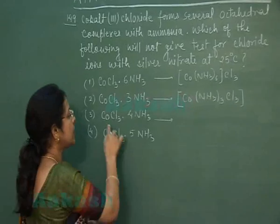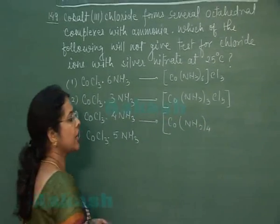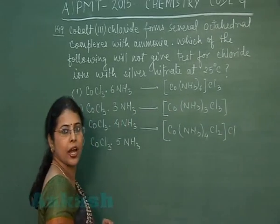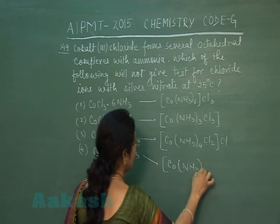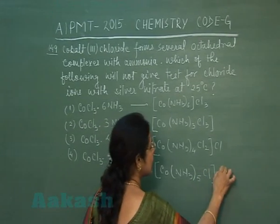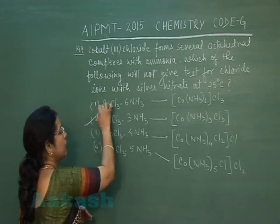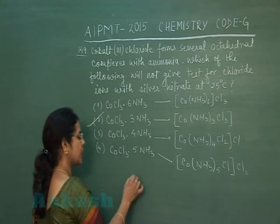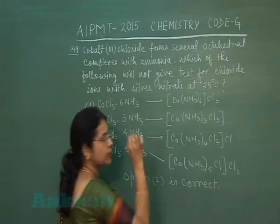Let us verify the other options. CoCl₃·4NH₃: all four ammonia molecules are ligands in the octahedral complex, two chlorines are ligands and one is present as a free ion — so it will give a white precipitate. Fourth option, CoCl₃·5NH₃: all five ammonia molecules are ligands, one chlorine as a ligand, and two chlorines as free chloride ions — so it also gives a precipitate. Based on structure, the second option is the complex with no free chloride ion. Option 2 is correct.